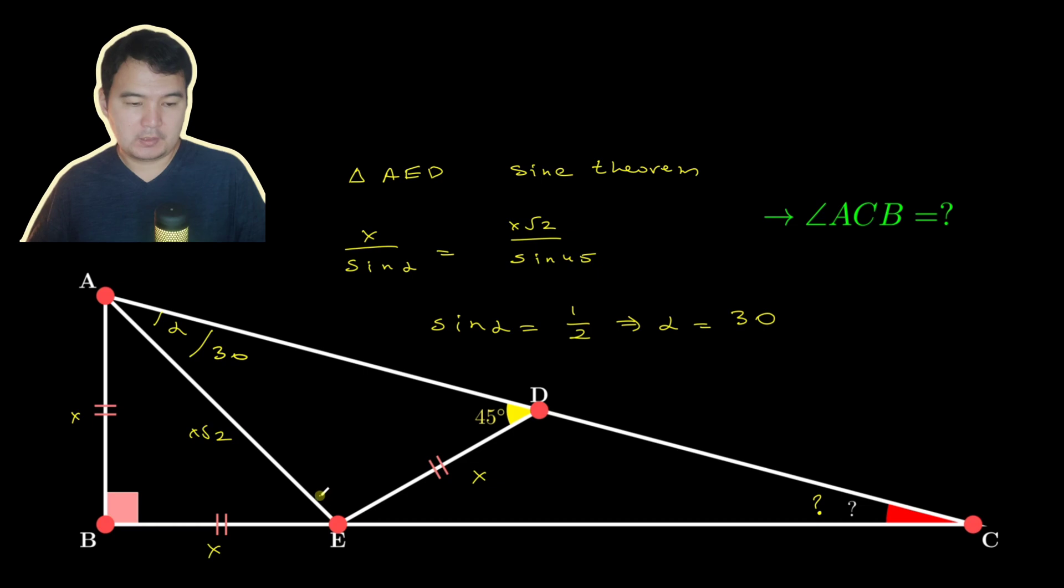And since this is 45, we need 15. 15 plus 30 would be 45 degrees. So that's the 15 degree.